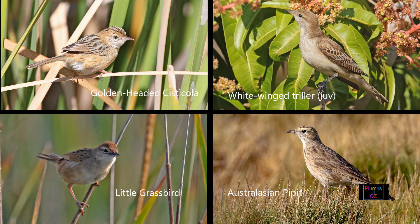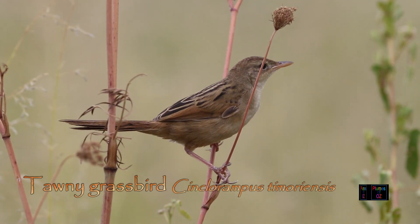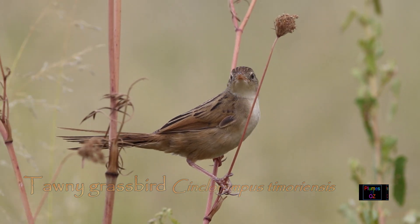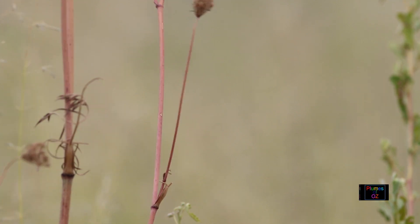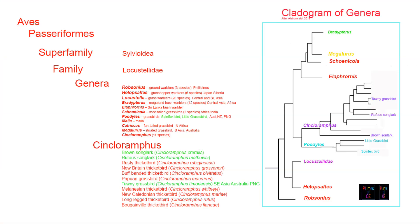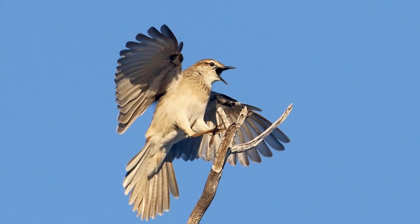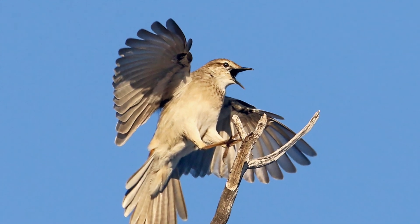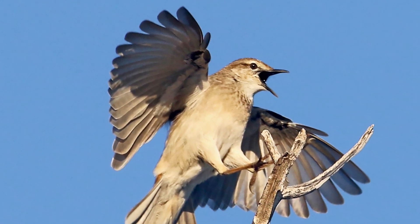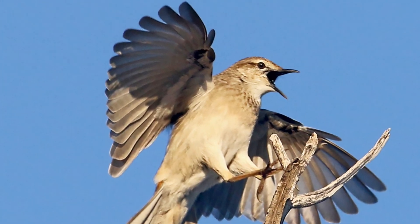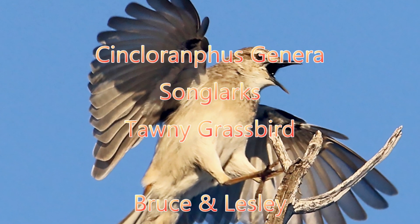The last bird to look at to complete the Cincloramphus of Australia is the tawny grassbird, which is usually found in green grassed areas in close proximity to water. Again initially belonging to the genus Megalurus, it is now in the genus Cincloramphus. Other birds belonging to the Megalurus genus — the spinifex bird and the little grassbird — have now been placed in a new genus called Poodytes, and we will cover these in a further video. On behalf of Plumes of Oz, I would again like to thank you for watching this video, and if you would like to be notified of further releases of Australian bird videos, please subscribe to the channel.